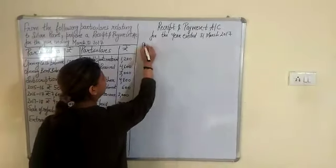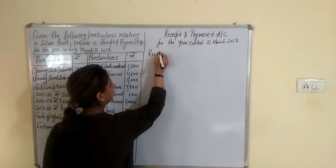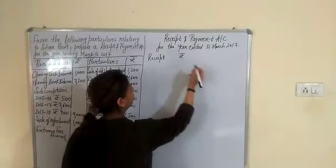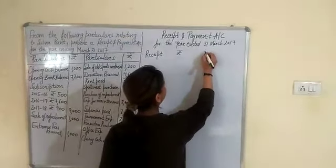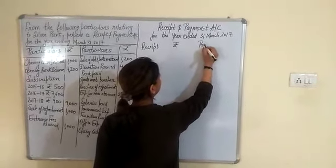So on the debit side we write receipts, and on the credit side we write payments.